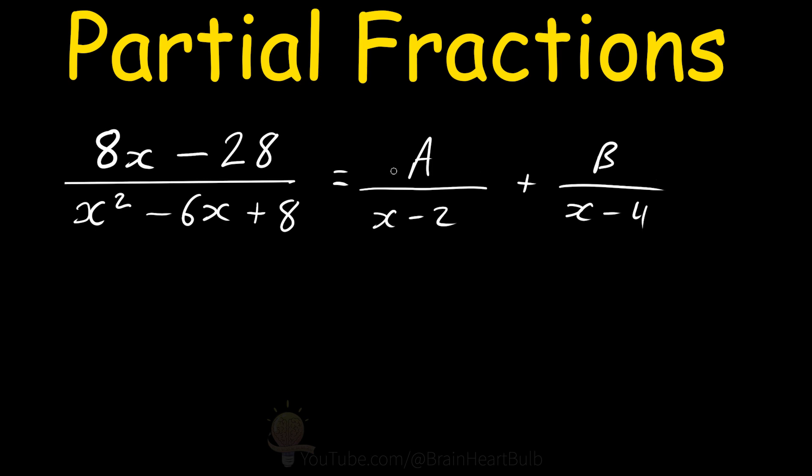But we can now add these two fractions together. So the easiest way to get the lowest common multiple for the denominators here is simply to multiply them together. So we have x minus 2 multiplied by x minus 4, which is the same as this polynomial here.